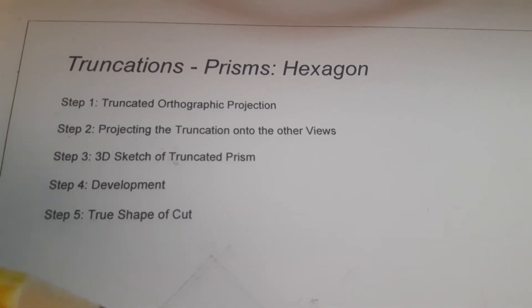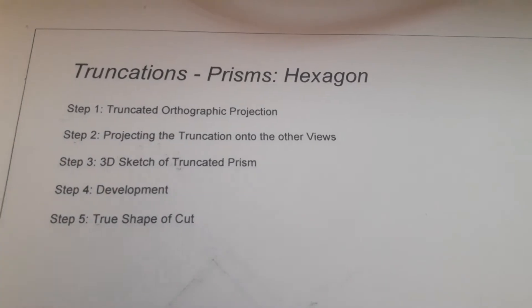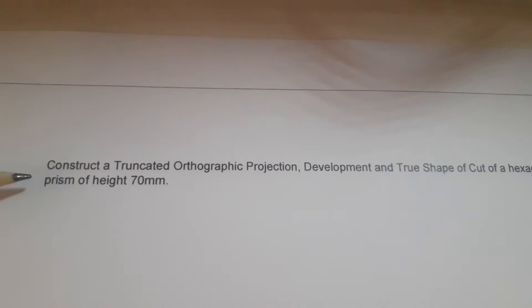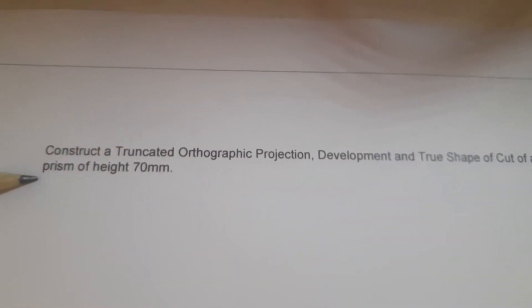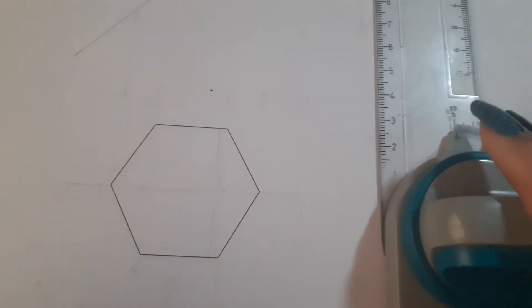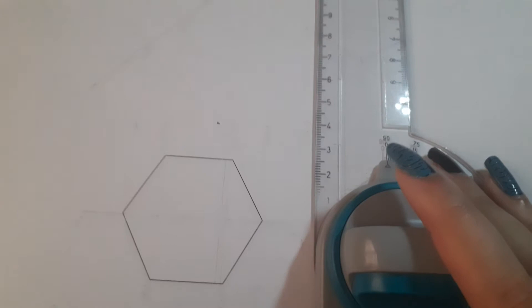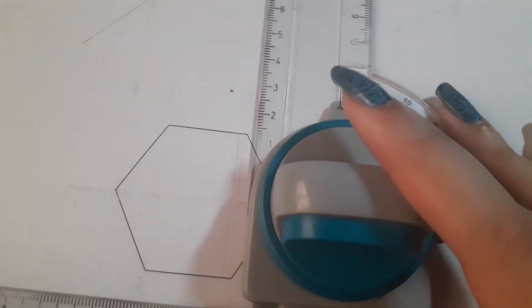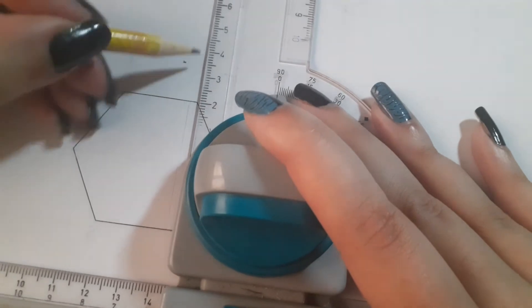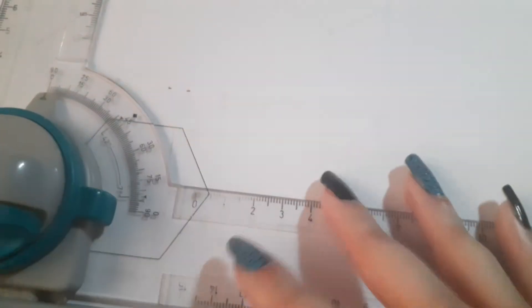Let's see the question now. Construct a truncated orthographic projection, development, and true shape of cuts of a hexagonal prism of height 70 millimeters. So I know that the front view is going to be 70 millimeters in length. Let's create the basis of the front view and end view — just creating the outlines for the front view and end view. Don't forget 15 millimeters spacing from the top and from the side.